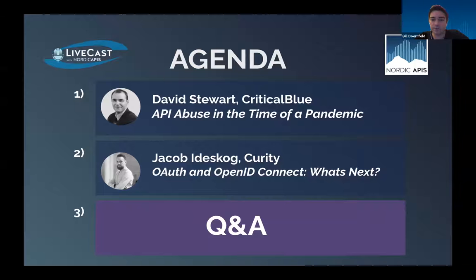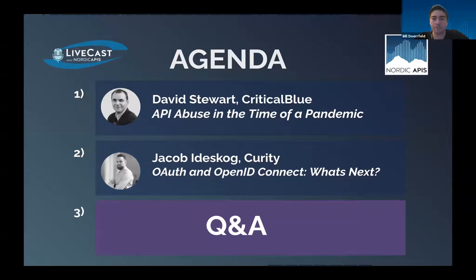In this hour-long segment, we'll be diving into how APIs could be abused and then cover some strategies to mitigate them. We'll first get an overview of API abuse and mobile threats in the time of a pandemic with David Stewart. Then with Jacobi Deskög, we'll get a status update on identity-driven API security standards like OAuth and OpenID Connect. We'll be doing back-to-back lightning talks, followed by a group Q&A. Please comment your questions and we'll be answering them in the Q&A section.